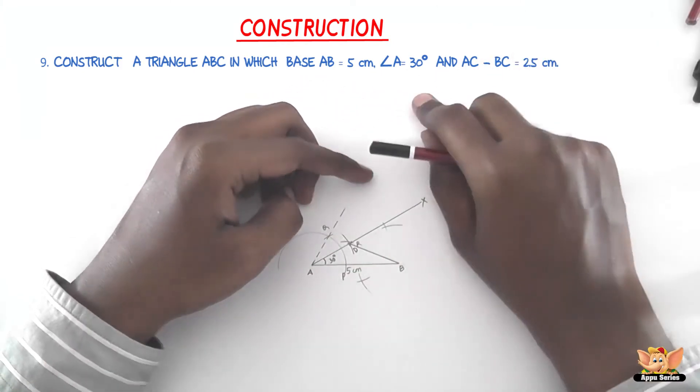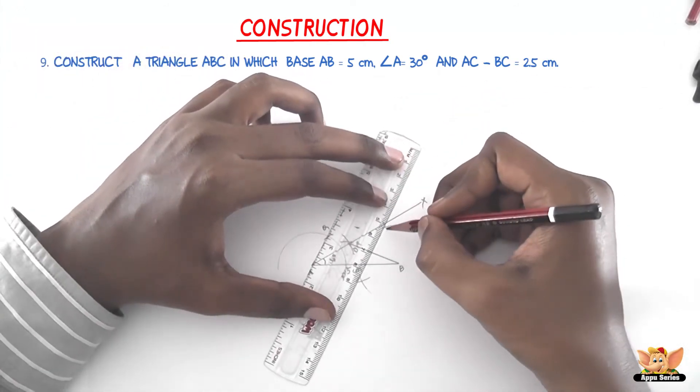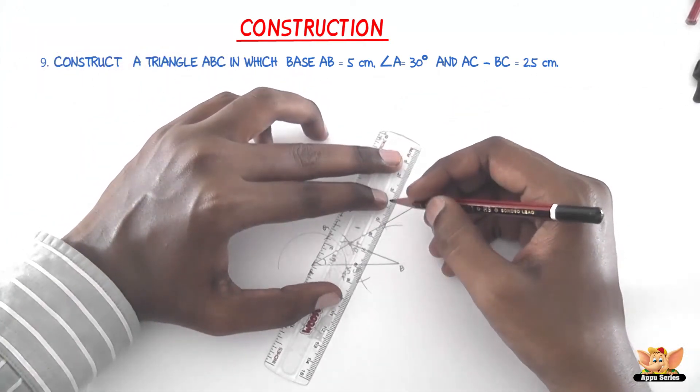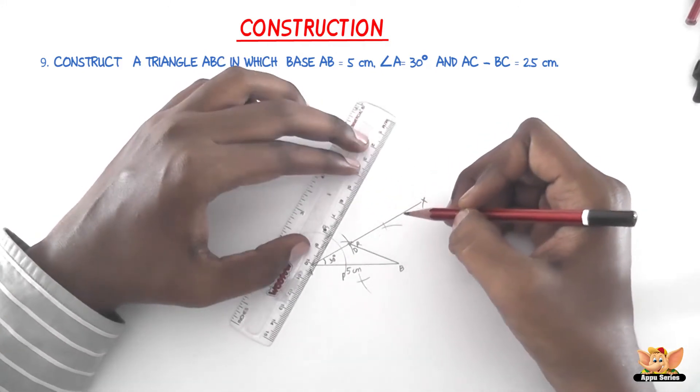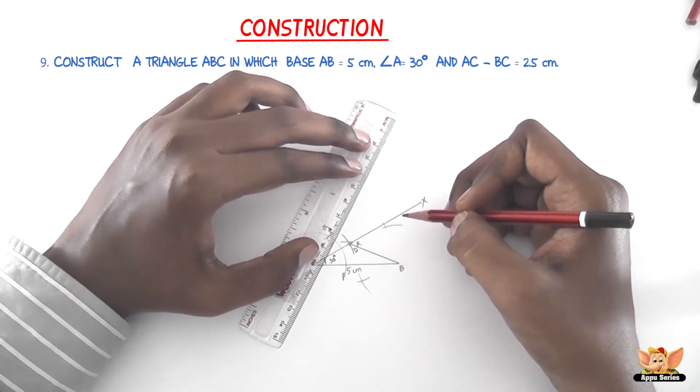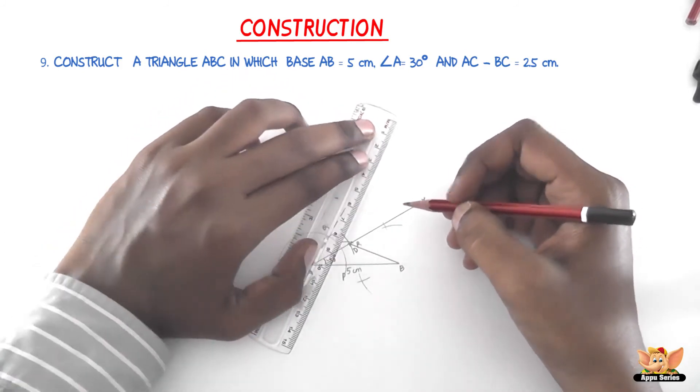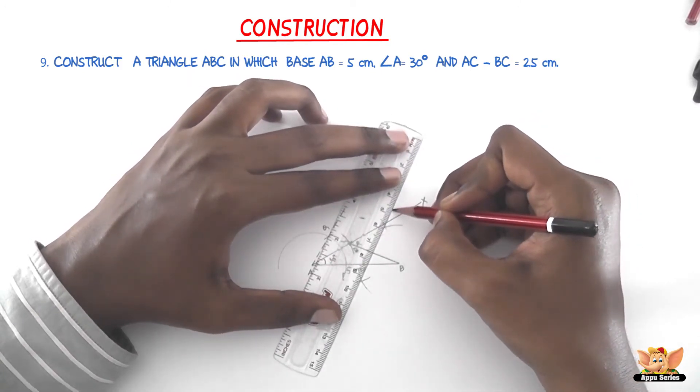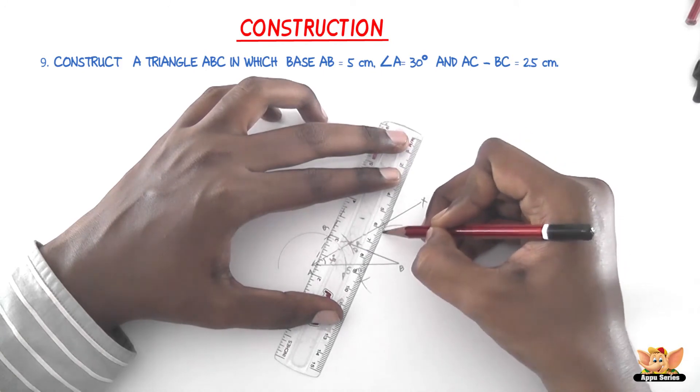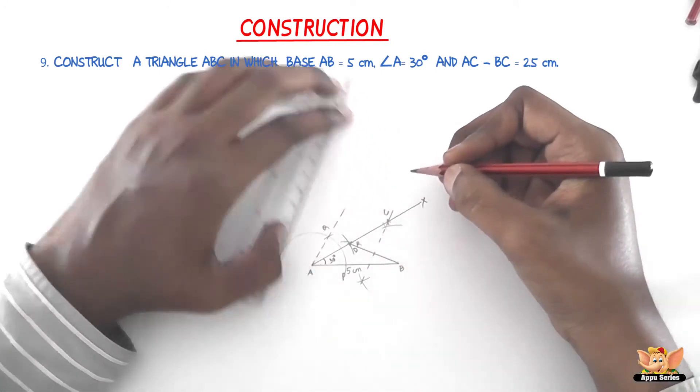And join these arcs. The main intention of these arcs is to join them and get a point C which cuts at AX. So this is the point we needed. It cuts at C.